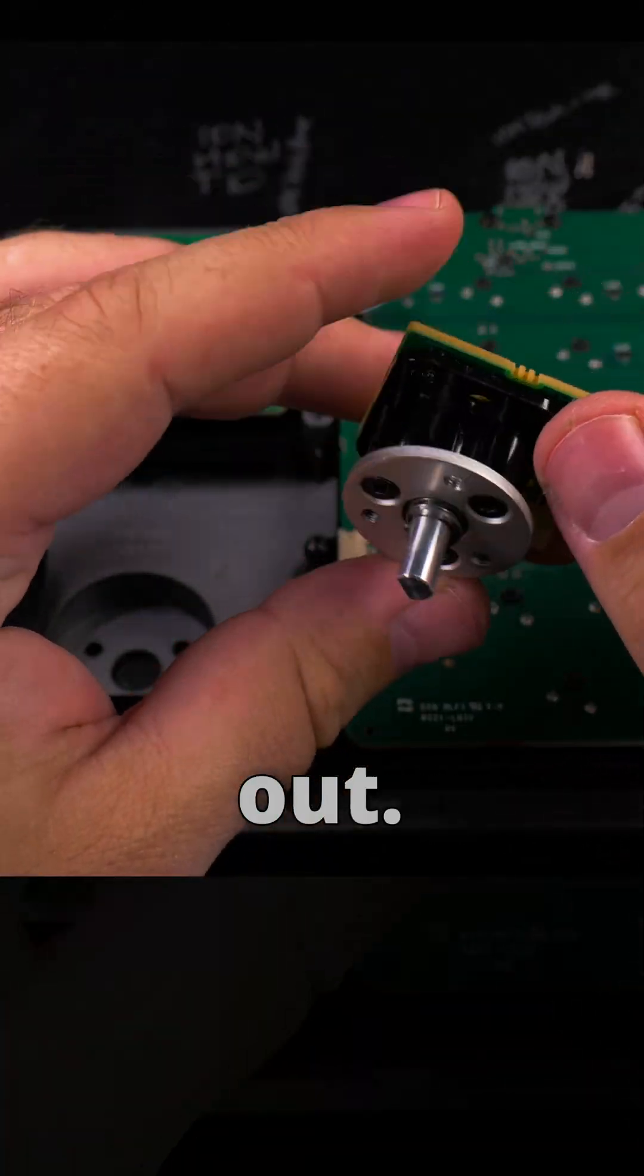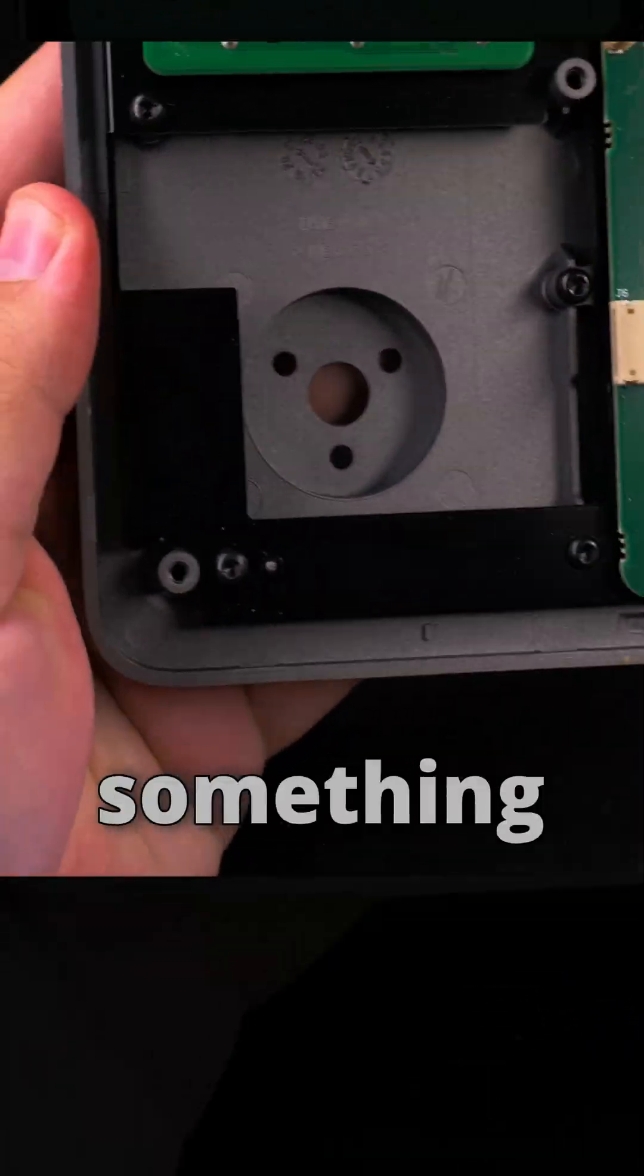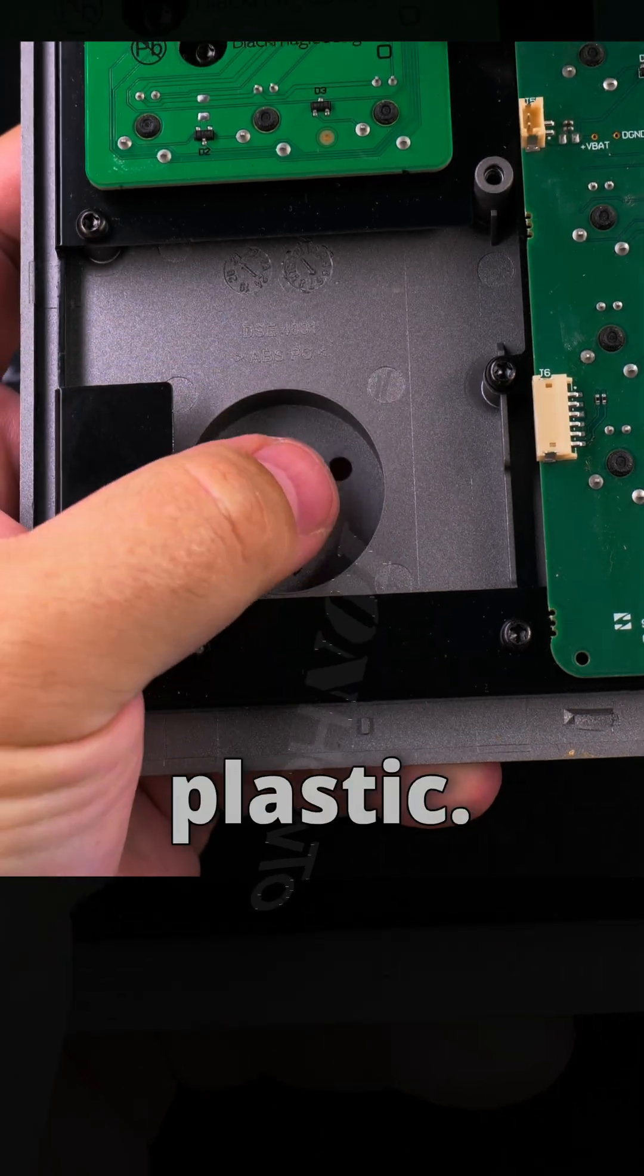And this is the magnetic encoder coming out. It's really simple, but perfect. I don't need something complicated. And the case is ABS for this plastic.